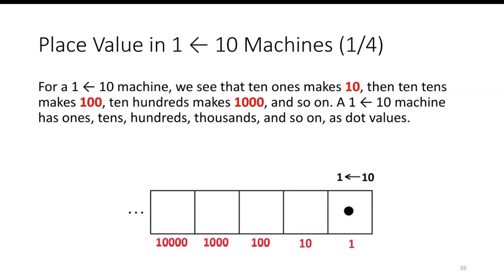For a 1←10 machine, we see that ten ones make 10, then ten tens make 100, then ten hundreds make 1,000, and so on. A 1←10 machine has ones, tens, hundreds, thousands, and so on as dot values.